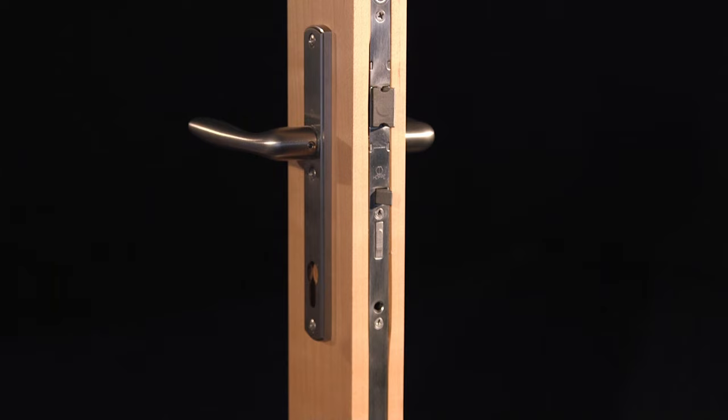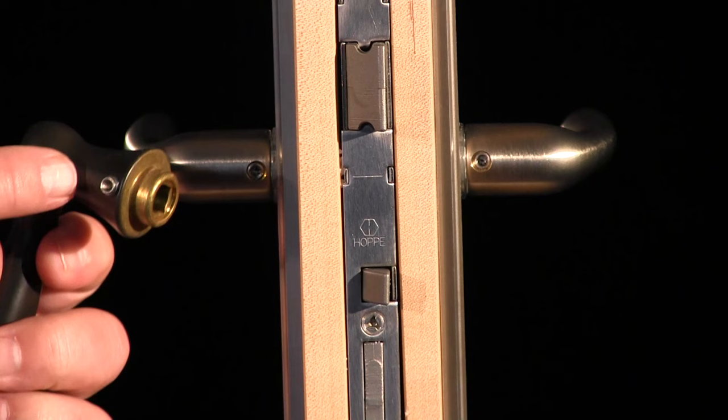After the cylinder has been removed, start by confirming that you have a standard handle set by looking for a stainless steel set screw either on the side or bottom of the handle.